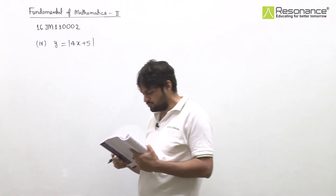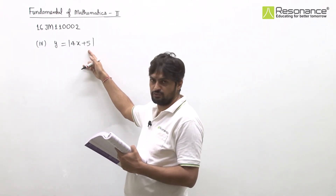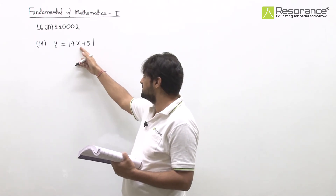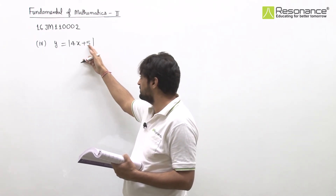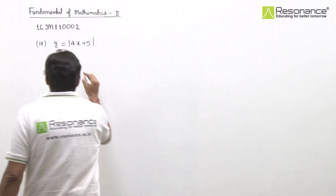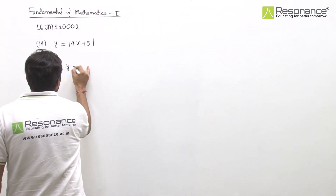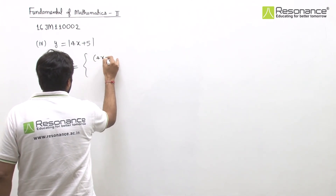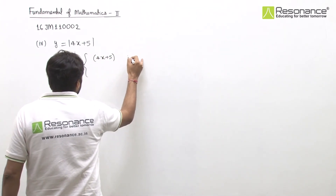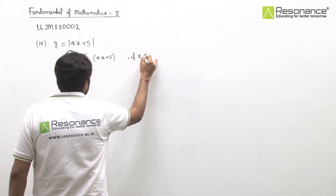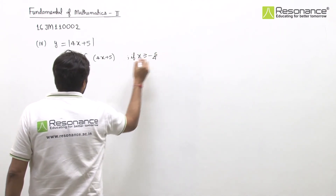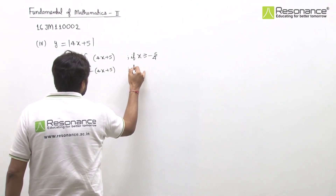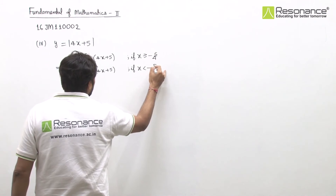In the fourth part, we have the graph of y equal to mod of 4x plus 5. This is very easy because there is only one term inside the modulus. The changing point is clearly x = minus 5 by 4, since 4x plus 5 equals zero at x = minus 5/4. Defining it: for x greater than or equal to minus 5/4, open with plus; for x less than minus 5/4, open with minus.